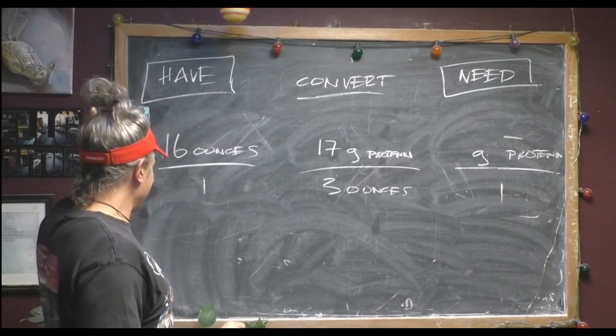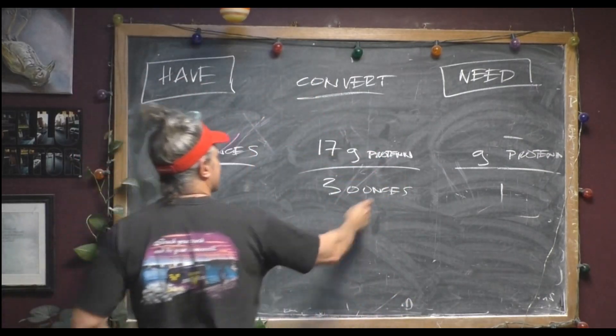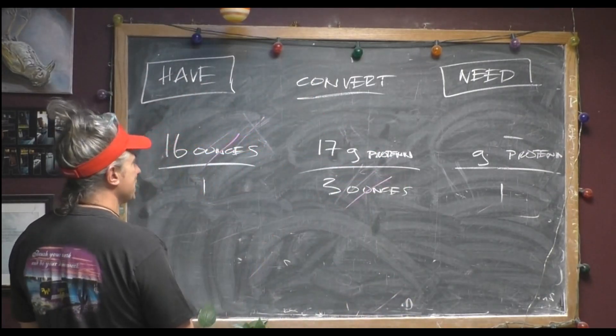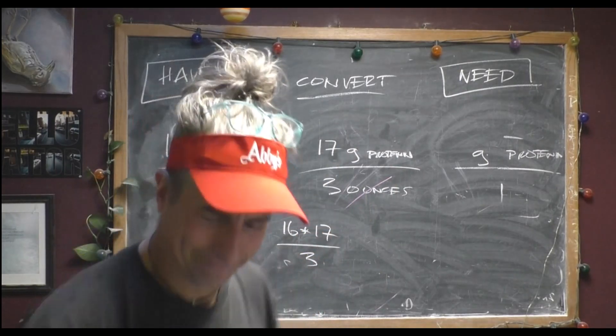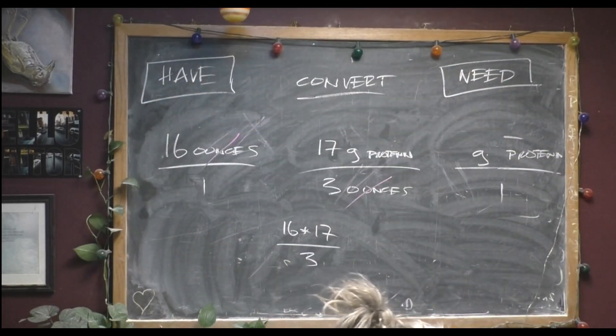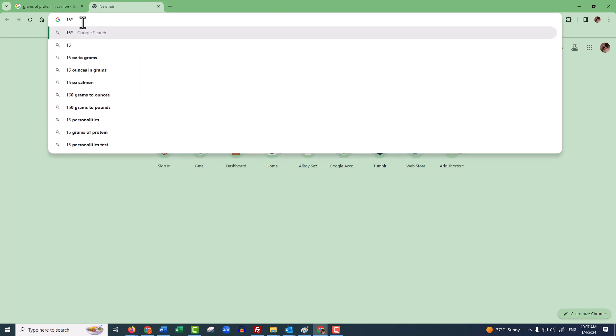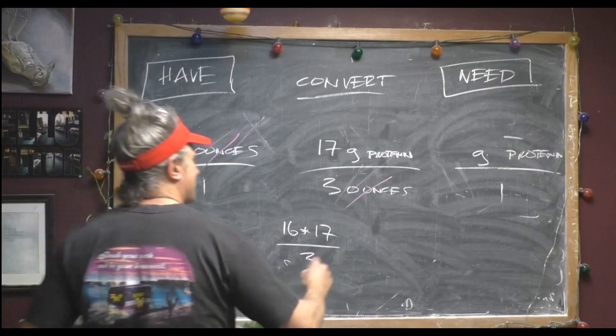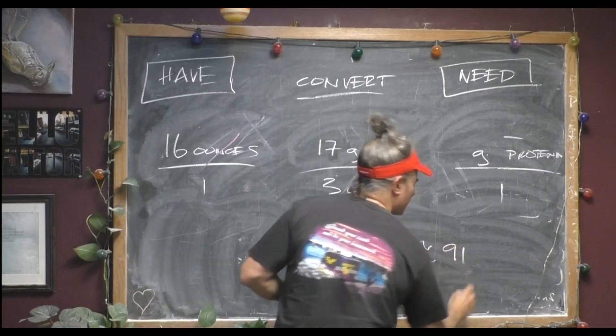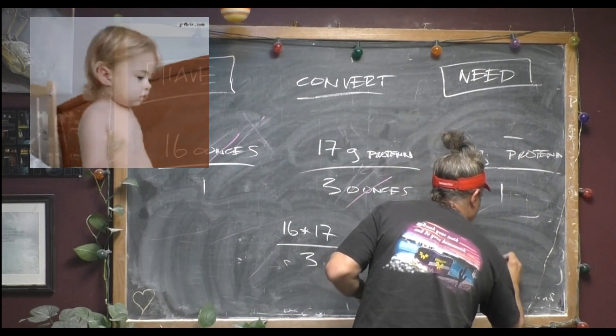Now all we've got to do is do this math right here. It's going to be a little bit messy, but the units work out. Ounces get rid of ounces. We have grams of protein. So we've got to do 16 times 17 divided by three. I get 91 grams of protein per pound. That's about 91. Yeah, 90.6 repeating. 91 grams of protein per pound.